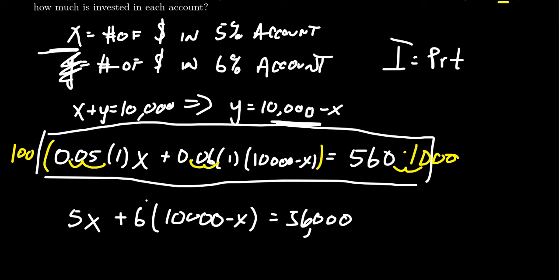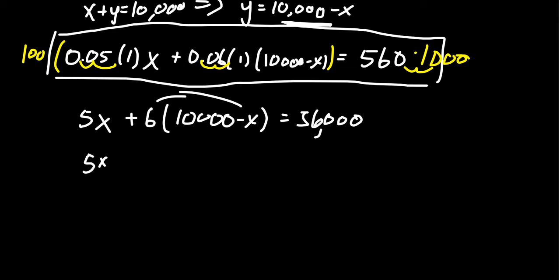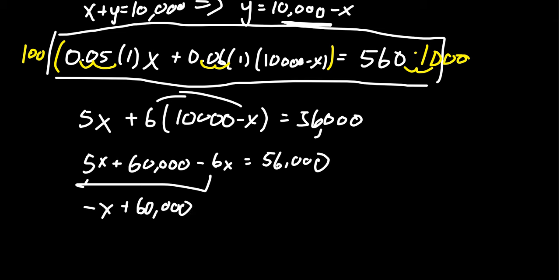And so then distribute the six right here. We're going to end up with 5X plus 60,000 minus 6X is equal to 56,000. So I would combine the X's together. This gives you a negative X plus 60,000 equals 56,000. Subtract 60,000 from both sides. You're going to get negative X equals negative 4,000 and divide by negative one. You see X equals 4,000.